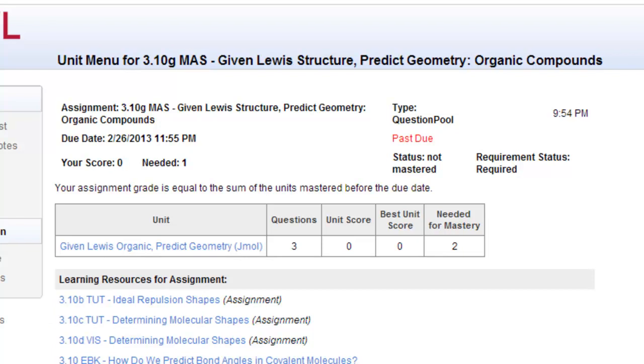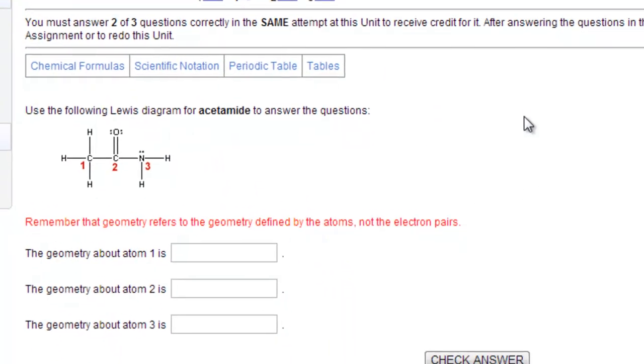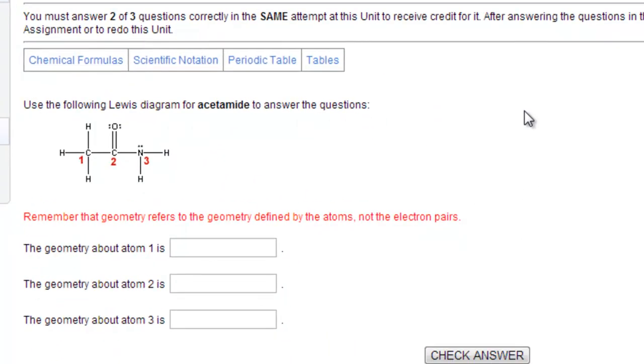Now we'll do a problem from OWL310G. Use the following Lewis structure diagram for acetamide to answer the questions. They're emphasizing here that we should use molecular geometry, not electron pair geometry.